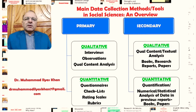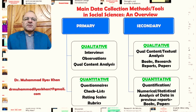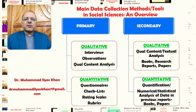To summarize, the main data collection tools in social sciences include primary research tools such as interviews, observations, content analysis, questionnaires, checklists, rating scales, and rubrics. The main secondary sources of data collection include qualitative content analysis or quantitative statistical analysis of previous research reports, books, or data that has been collected for other research or academic purposes.